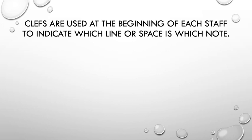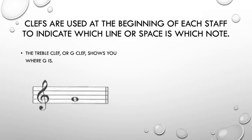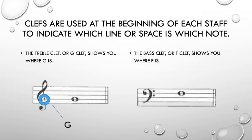Signs called clefs are placed at the beginning of each staff. So here we have a treble clef or G clef because it curls around the second line of the staff, indicating the location of G. The bass clef, or F clef, has two dots on either side of the fourth line of the staff, indicating the location of F.